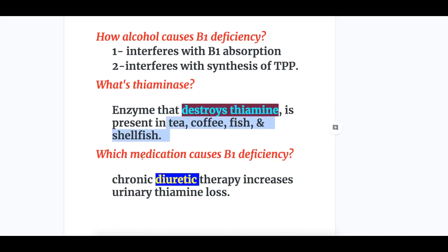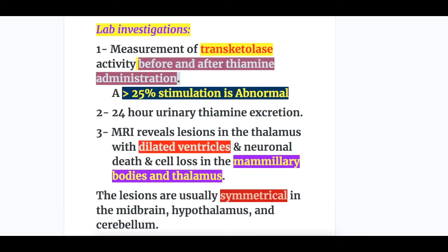Which medication may cause vitamin B1 deficiency? Chronic diuretic therapy increases urinary thiamine loss, causing vitamin B1 deficiency.